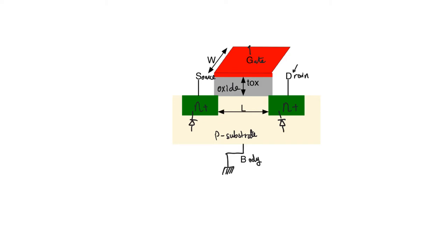The distance between the source and the drain is called L, specifically the channel length. The dimension in the depth of the drawing is called W, the channel width. The thickness of the oxide is called T-oxide.